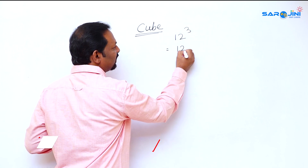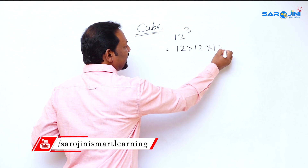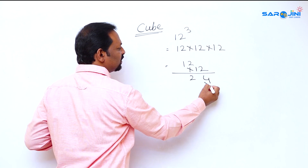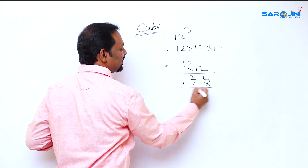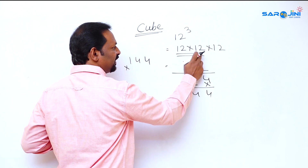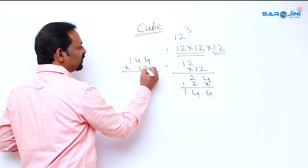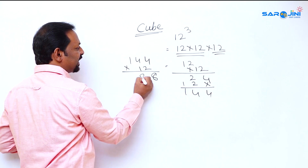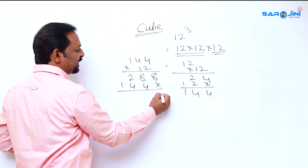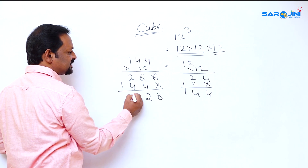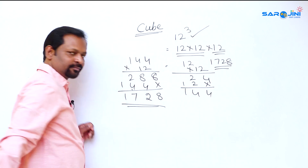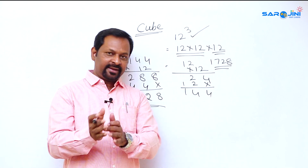Let's take 12 cubed, which is 12 × 12 × 12. First, 12 × 12: two twos are four, two ones are two, one one is one — that gives 144. Then 144 × 12: two fours are eight, two ones are two, one four is four, one one is one — giving us 1728. So 12 cubed equals 1728.